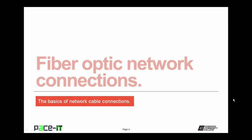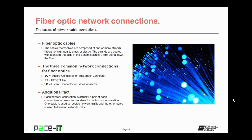Let's start with fiber optic network connections. The fiber optic cables themselves are composed of one or more strands — fibers — of high-quality glass or plastic. The strands are coated with a sheath called cladding, that aids in the transmission of a light signal down the fiber.